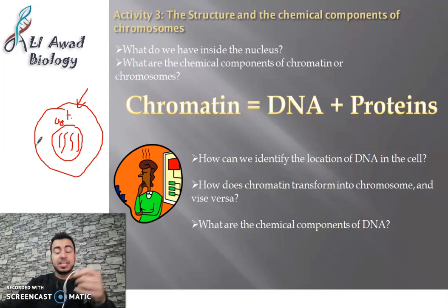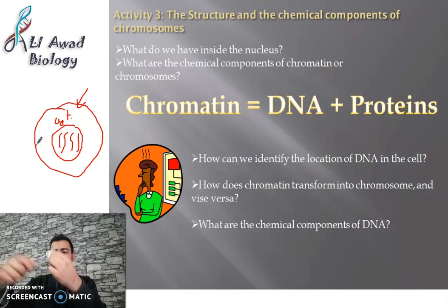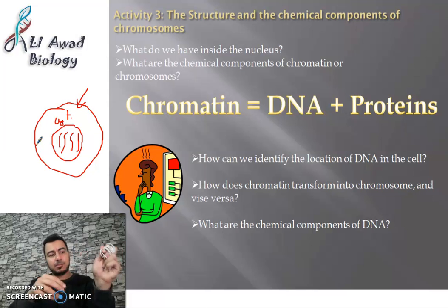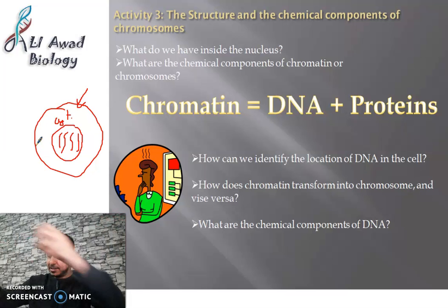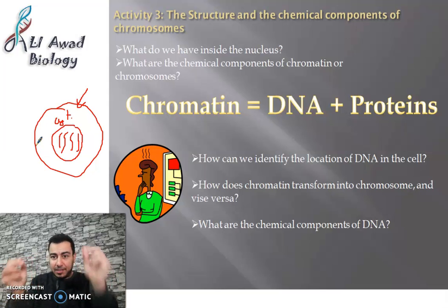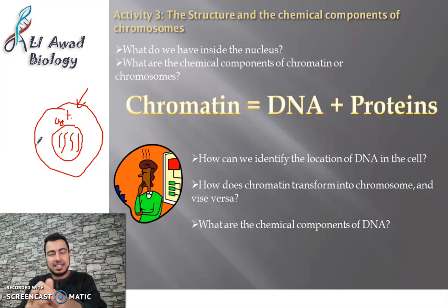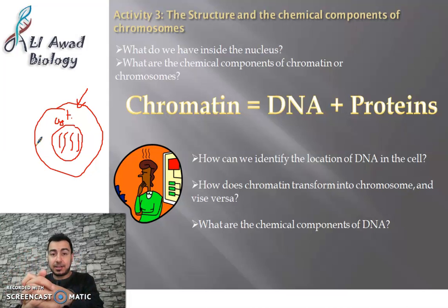However, during cell division, the chromatin condenses and becomes a chromosome. So chromatin and chromosome have the same meaning — both are carriers of genetic information. The chromatin is the form at rest, and the chromosome is the form during cell division.